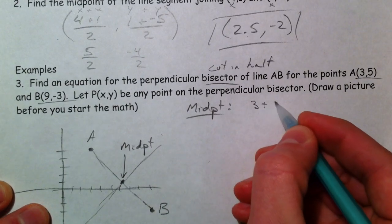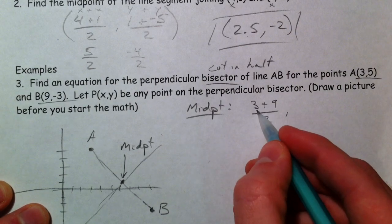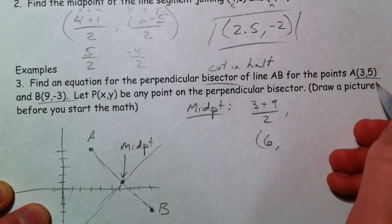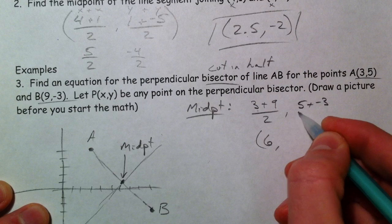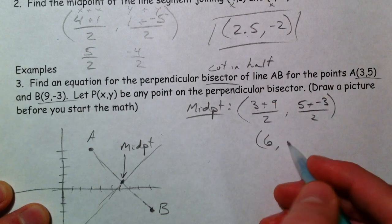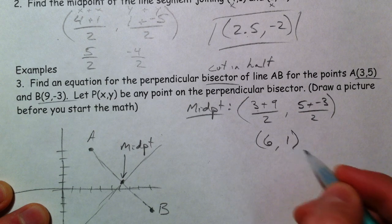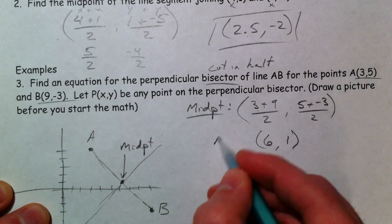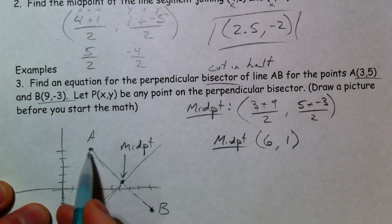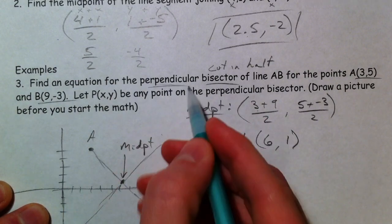So 3 plus 9 divided by 2, average the x's. That's 12 divided by 2, which is 6. And 5 plus -3 is 2, 2 divided by 2 is 1. So that's my midpoint: (6, 1). That's what my line has to go through. So we have the bisecting part of it. Now we need the perpendicular part of it.